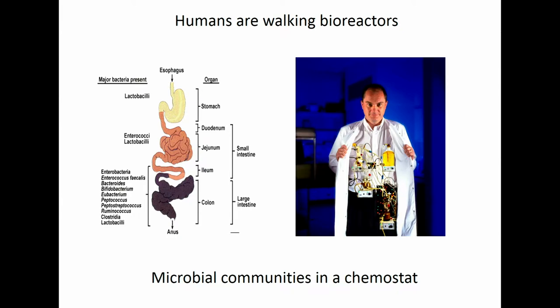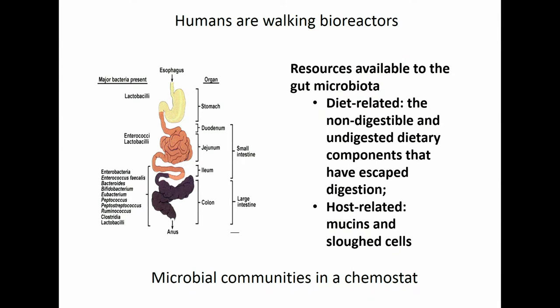If you look at the human gut, it's just a working bioreactor — it's a chemostat. The nutrients constantly put into the system come from two sources: diet and host. Non-digestible and undigestible dietary components that escape our digestion and absorption will inevitably be used by some bacteria — this is one source of nutrients. The other source is from the host: mucins we secrete, sloughed cells of the colon, and other secretions such as bile acids. So it's a combination of diet and host-derived nutrients which sustain the gut microbiota community.